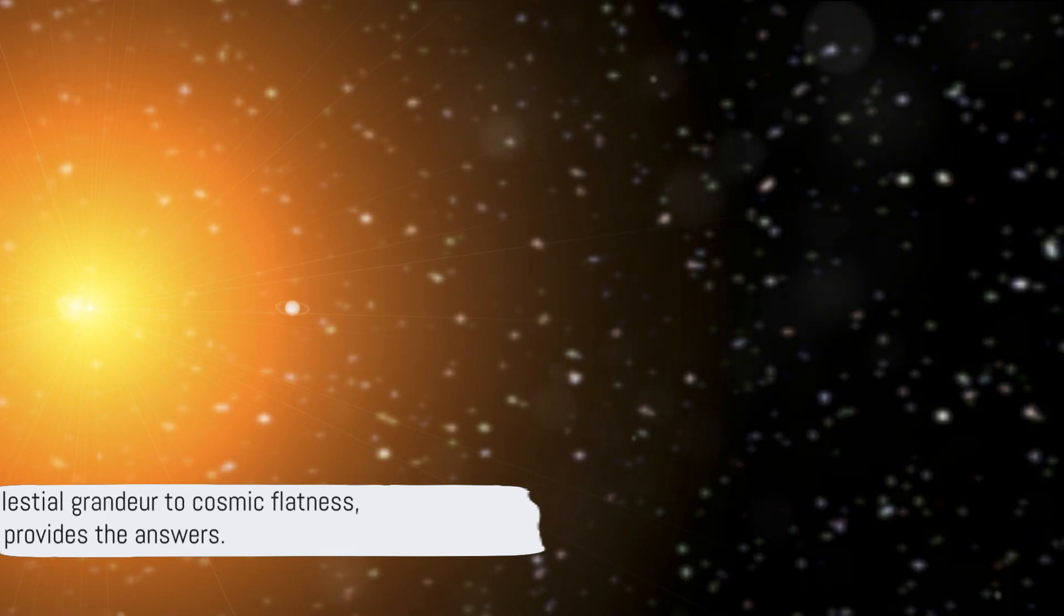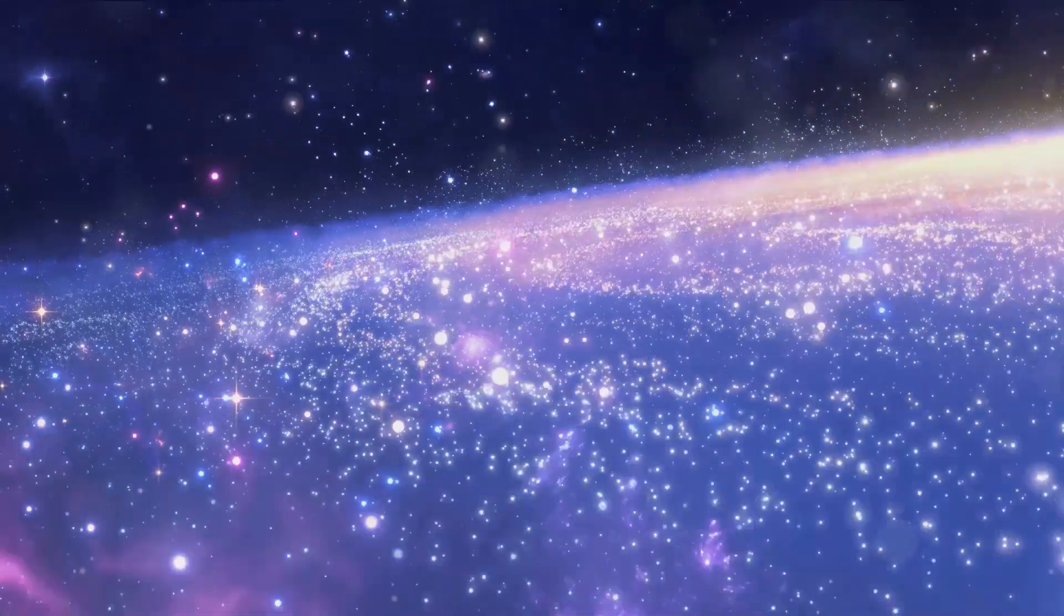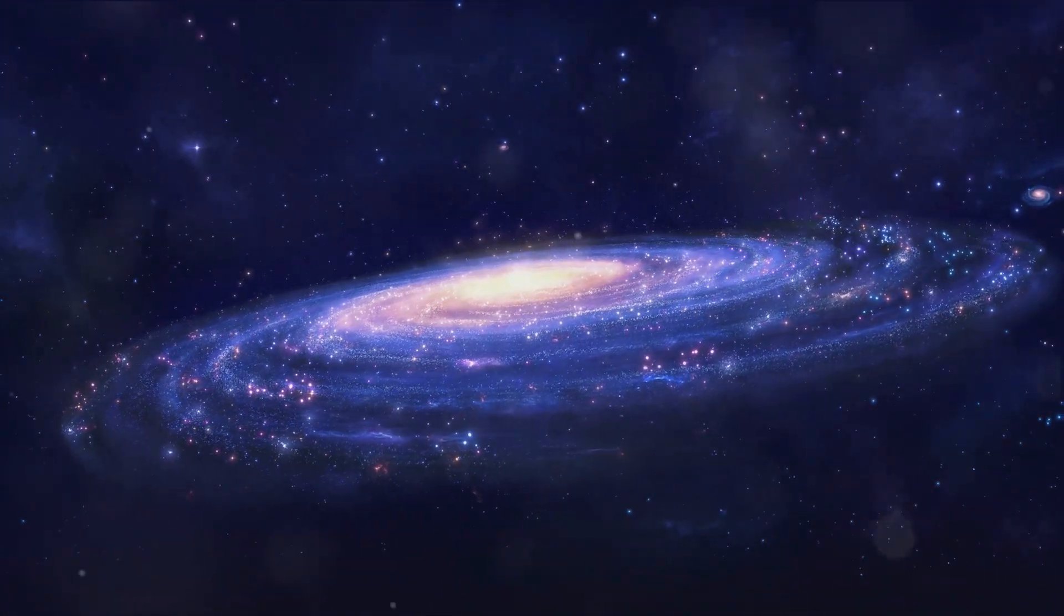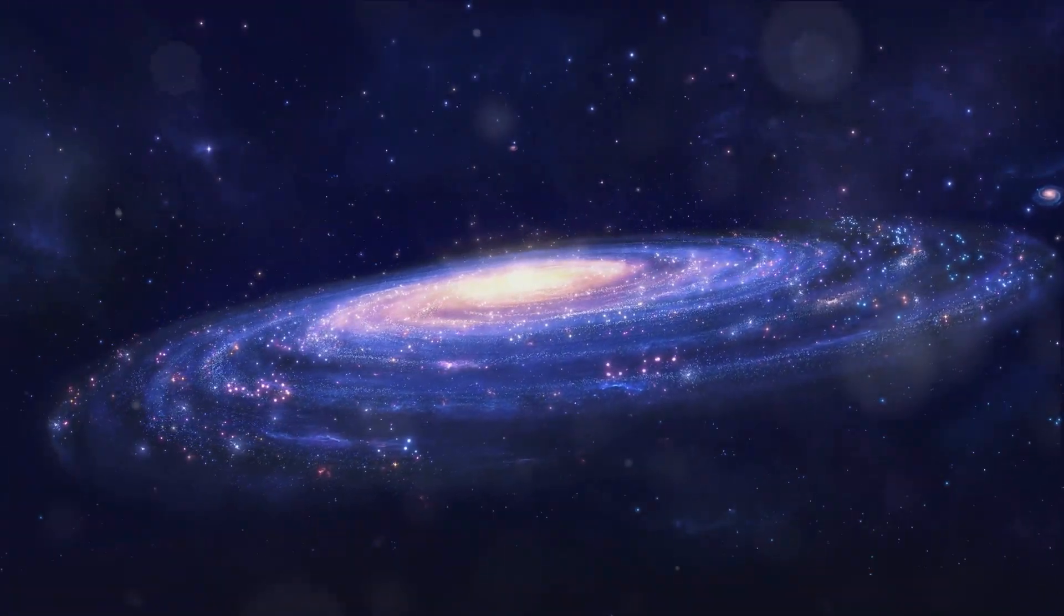From the grandeur of celestial bodies to the flatness of our solar system, science provides the answers. And in this case, the reason behind why our solar system is flat is plain and simple: physics.